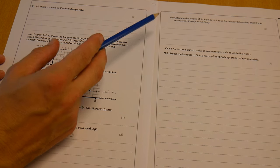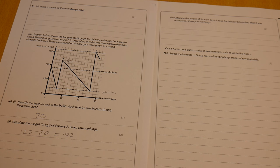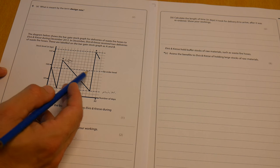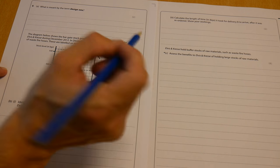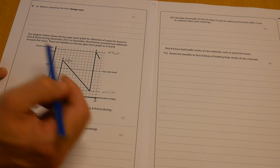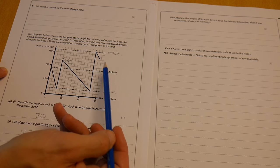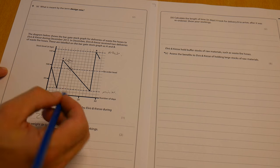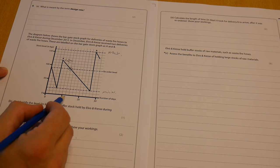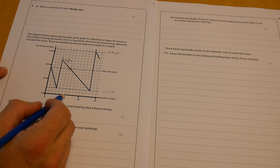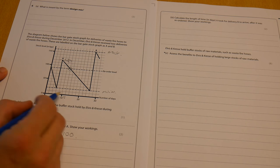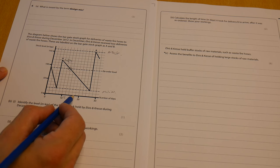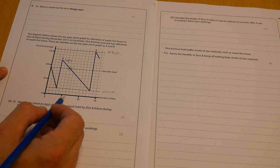The next question is to calculate the length of time in days it took for delivery B to arrive after it was reordered. So, again, show your working. Look at this reorder line. We've got a maximum stock holding point up here. That's not relevant in these questions, but just remember that is our maximum stock holding. So that's all they can take in their warehouse or storage facilities. We can see at this point here, that is where the order is placed. That seems to correspond to 12 days because it looks as though this is breaking down into twos. So while we've got 10 kilos on each of these vertically, each of these represents two days.